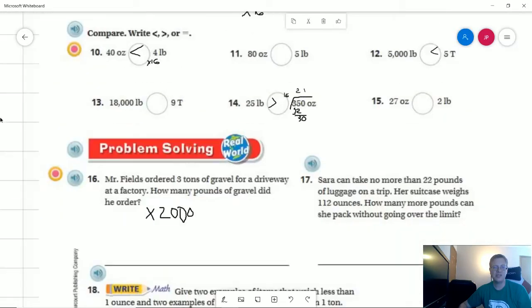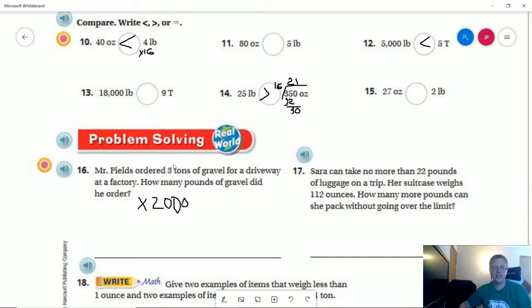So number 16, we would multiply the number of tons by 2,000 pounds, and that would give us 6,000 pounds of gravel that was ordered.